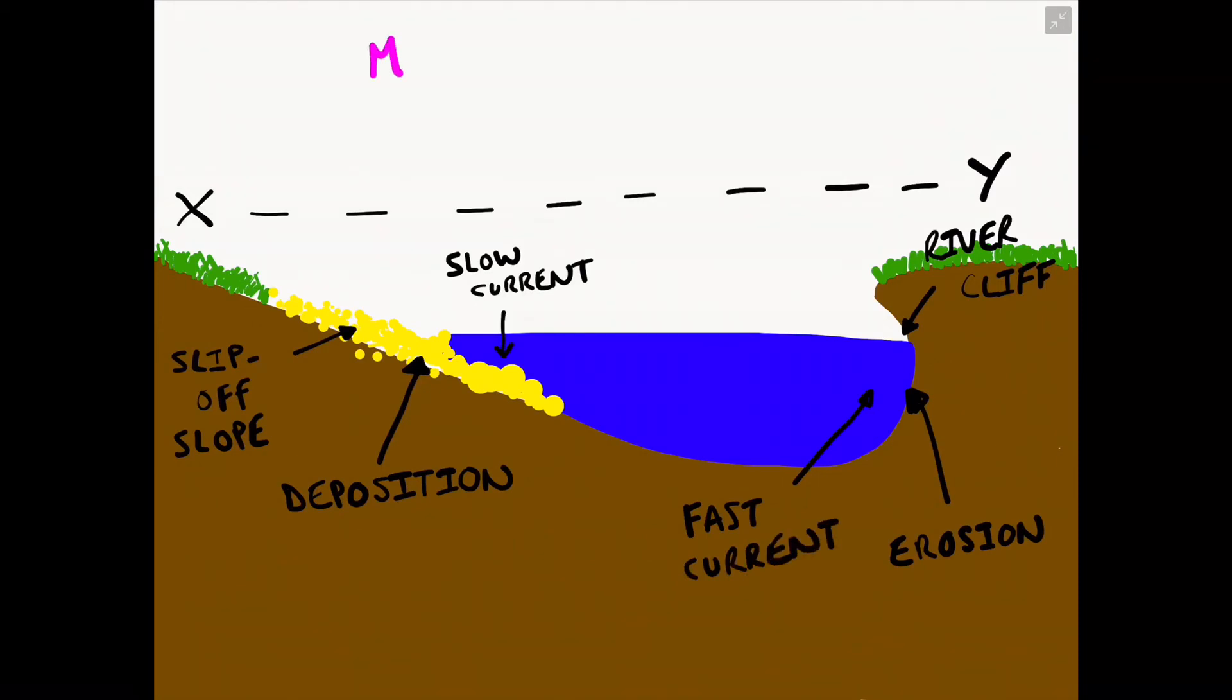So in an exam question you could be asked to label a cross section of a meander and these are the type of labels the examiner would be looking for.